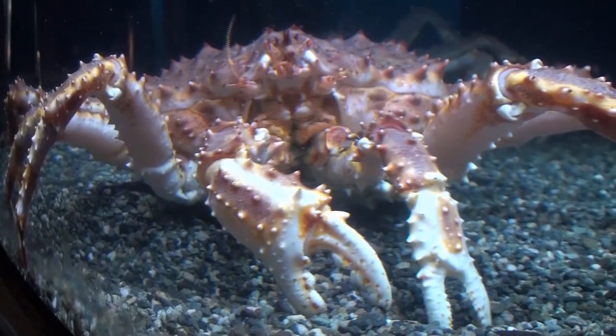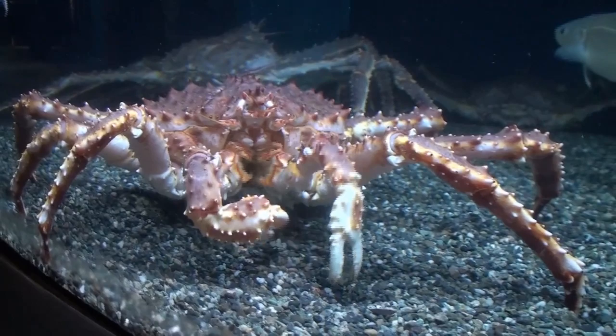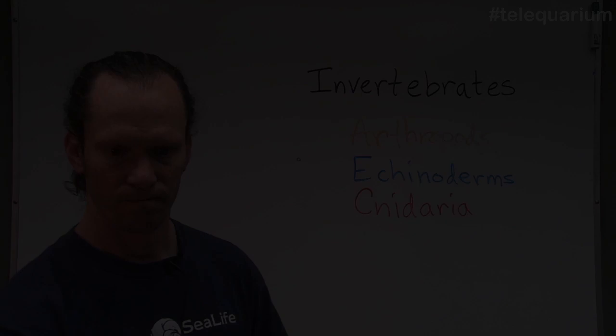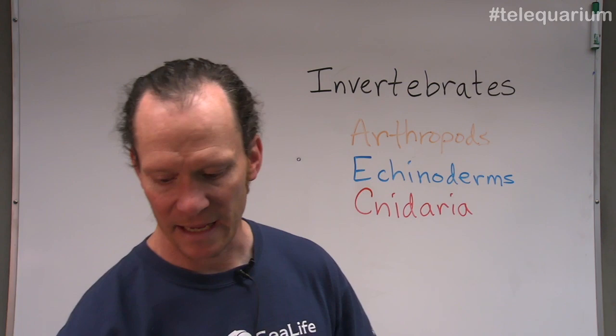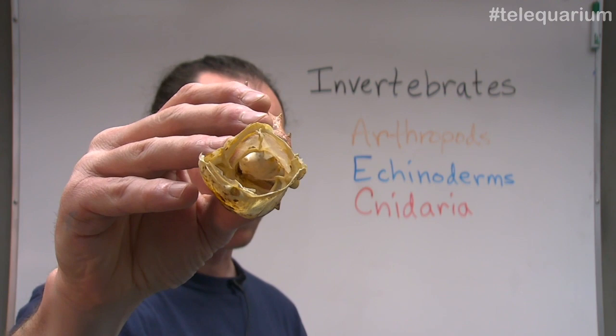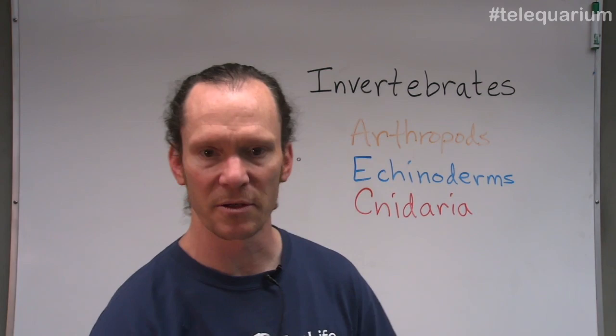The interesting thing about exoskeletons, though, is they cannot grow — they have to be replaced. Just like we will outgrow our clothes, these animals will outgrow their exoskeleton. When they do that, in order to grow, they have to molt, which means to shed their exoskeleton. If you look at a piece of crab leg here from a red king crab, we can see right through it — it's completely hollow. That's because this is from a molt. The crab is gone, but the exoskeleton remains. You can find crab molts all over the beaches because they're just empty exoskeletons that wash up on shore.